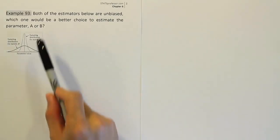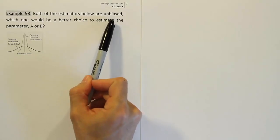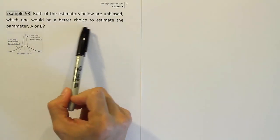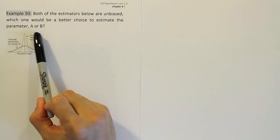Example 93. Both of the estimators below are unbiased. Which one would be a better choice to estimate the parameter, A or B?